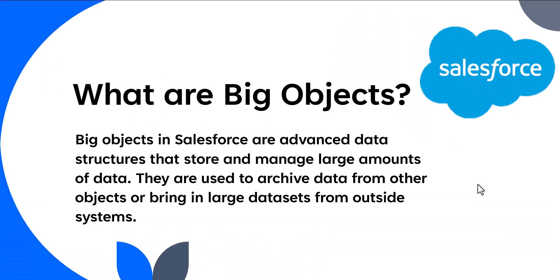So first, what are Big Objects in Salesforce? Big Objects are advanced data structures that store and manage large amounts of data. When I say large amounts, that means they can store records in the billions. They are used to archive data from other objects or bring in large datasets from outside systems. We can say Big Objects are designed to store massive amounts of data on the Salesforce platform without compromising performance.